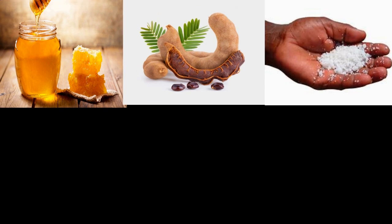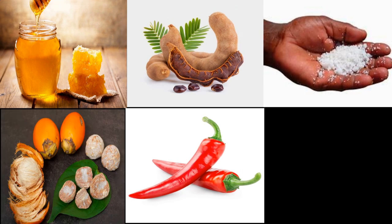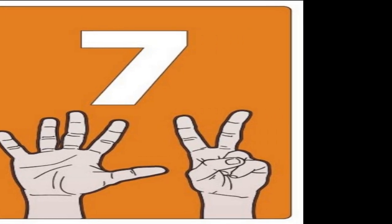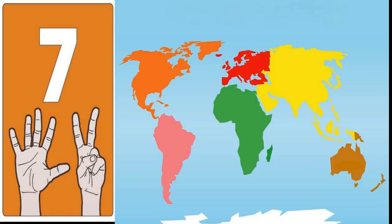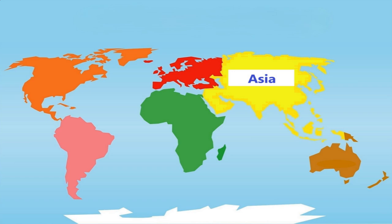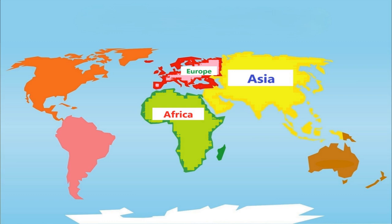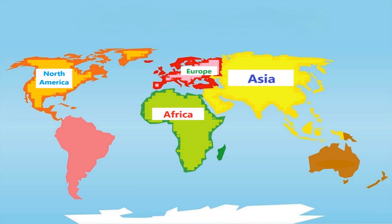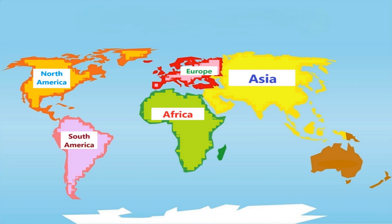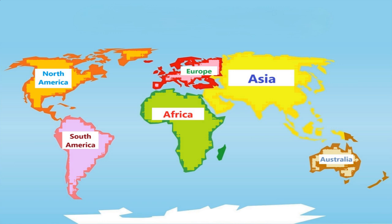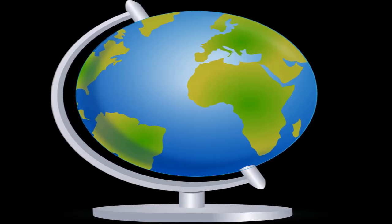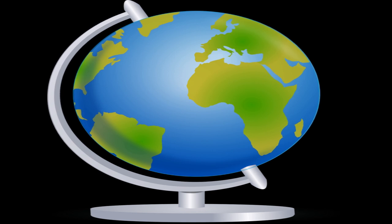7. There are seven continents on Earth. The seven continents are Asia, Europe, Africa, North America, South America, Australia, and Antarctica. The seven solid parts of Earth are called the seven continents.